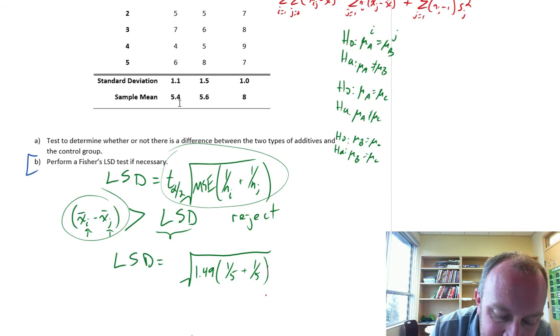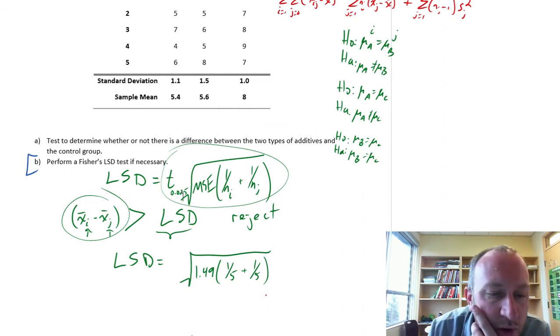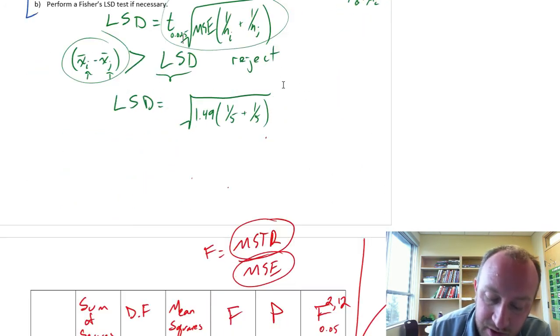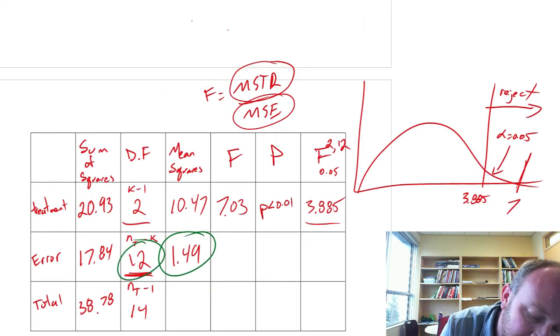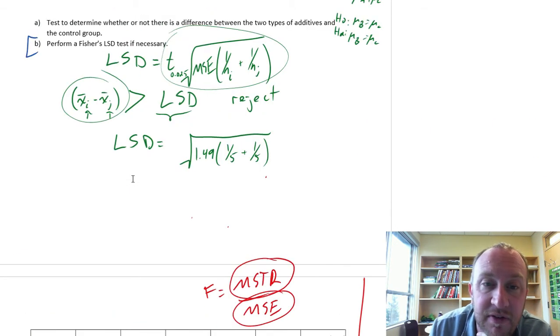and now we need a critical value for alpha divided by 2. Let's do all of these tests at the 0.05 level of significance, so alpha will be 0.025. Now, what are our degrees of freedom? Degrees of freedom always corresponds with our estimate of the variance. Here our MSE was 1.49, we have 12 degrees of freedom that correspond to that estimate of the variance.